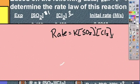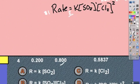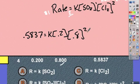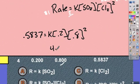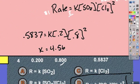Writing the rate law expression, then pick an experiment to find K. I'll use experiment 4: 0.5837 equals K times (0.2)^1 times (0.8)^2. Make sure you use the orders you just determined. Solving, K equals 4.57. We'll go over the units in class. The overall order for this reaction is third order, and that concludes this lesson.